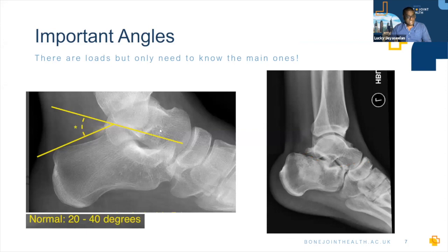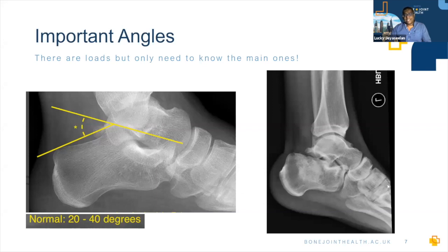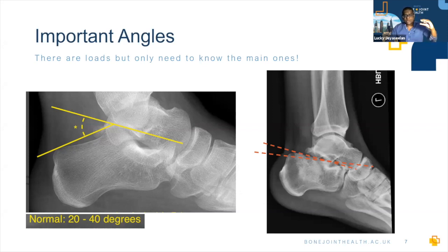Böhler's angle is the other important angle. It is subtended between a line from the highest point of the anterior process to the highest point of the posterior facet, and a line from the highest point of the posterior facet to the highest point of the posterior tuberosity. It should normally be about 20 to 40 degrees. When the calcaneus flattens out, Böhler's angle gets smaller — so basically the calcaneus is getting flatter and flatter, and Böhler's angle decreases.